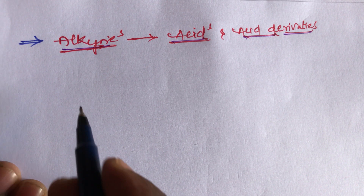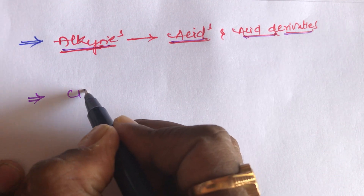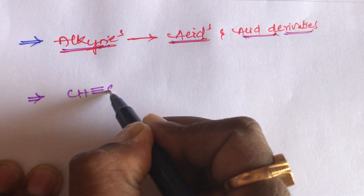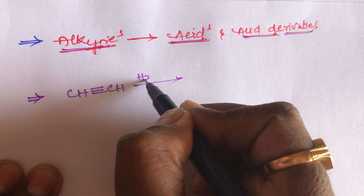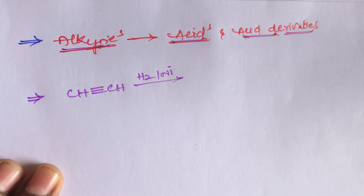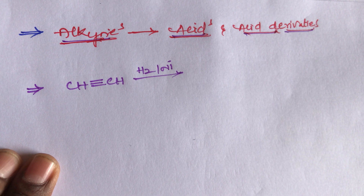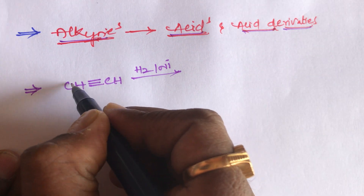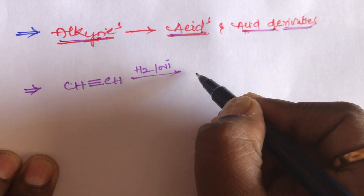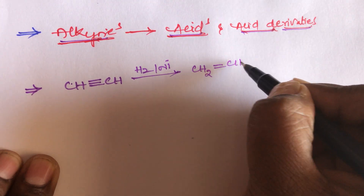Take the example for alkynes — that is ethyne. Take the ethyne chain CH triple bond CH. When ethyne reacts with hydrogen H₂ by nickel — nickel acts as a catalyst — that is catalytic hydrogenation, meaning addition of hydrogen. One hydrogen will attack this carbon, one more hydrogen will attack this carbon, and we get the product CH₂=CH₂.